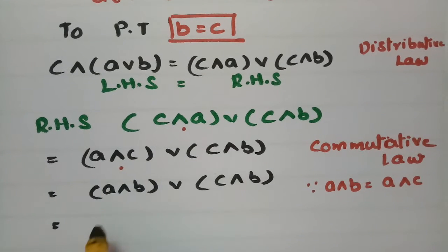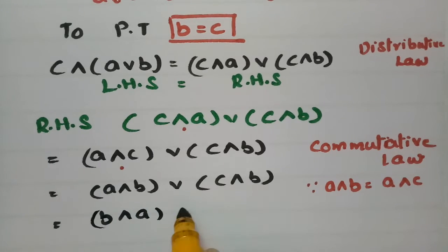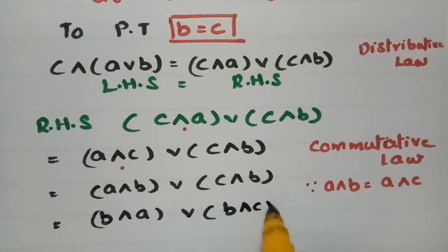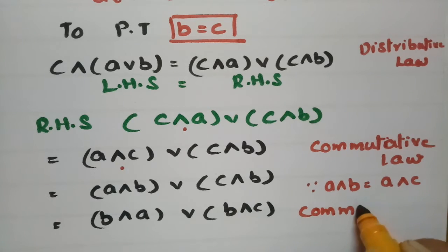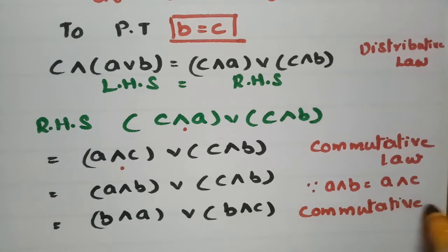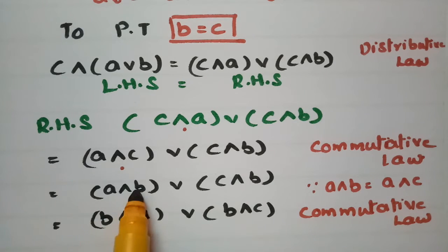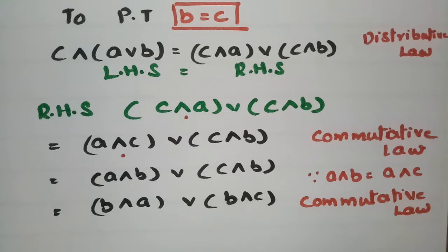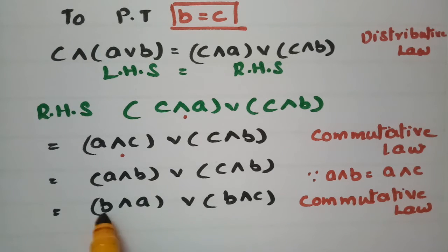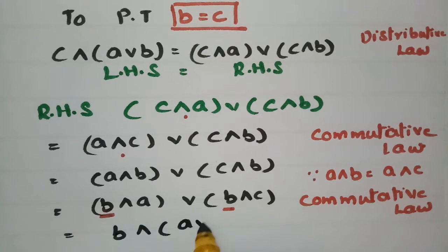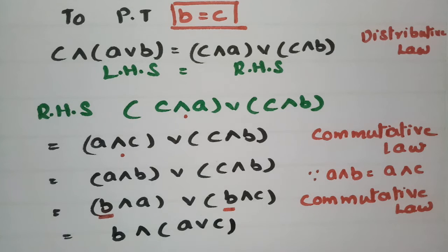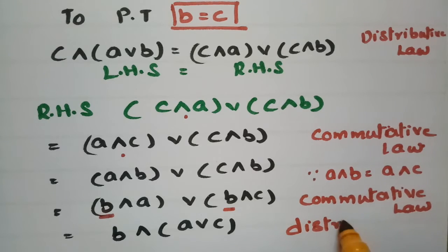Again applying the commutative law: a∧b can be written as b∧a, and c∧b can be written as b∧c. Now both terms share a factor of b. Since L is a distributive lattice, I apply the distributive law to factor out b: b∧(a∨c).